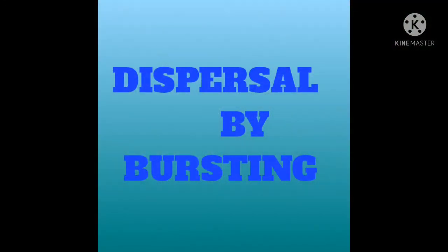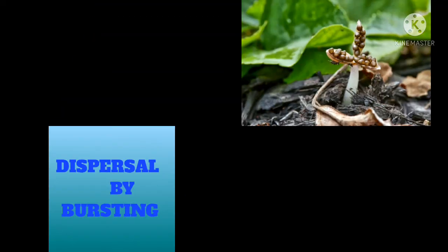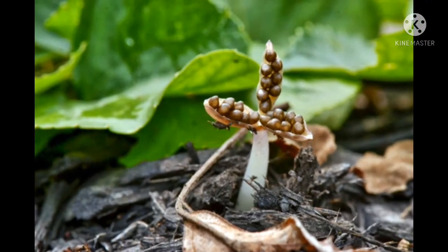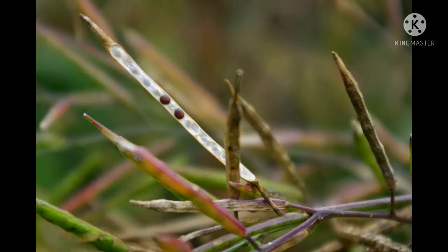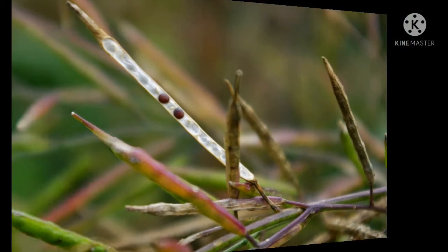Dispersal by bursting. Many fruits enclose the seed in a capsule or pod. Upon drying, the pod explodes, releasing the seeds with great force into the surroundings. For example, mustard seeds.